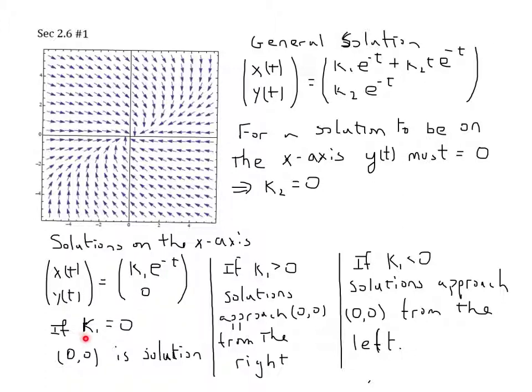There are three cases. If k₁ equals 0, then this term is 0, and I'm at (0,0), an equilibrium solution. I never budge from that. This is a solution.